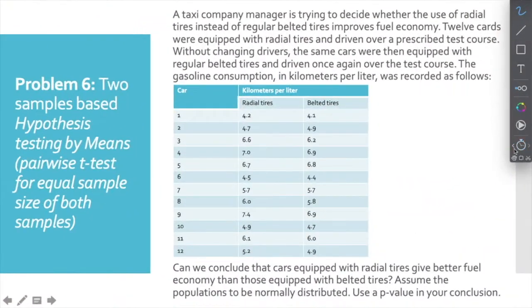Let's see this case. A taxi company is trying to decide whether the use of radial tire instead of regular belted tire improves fuel efficiency. Without changing driver, the same cars were then equipped with the new tire, tested with intervention of belted tires. Now they want to see whether the car equipped with radial tire gives better fuel economy than those equipped with belted tire using hypothesis. Sample size is same in both cases.